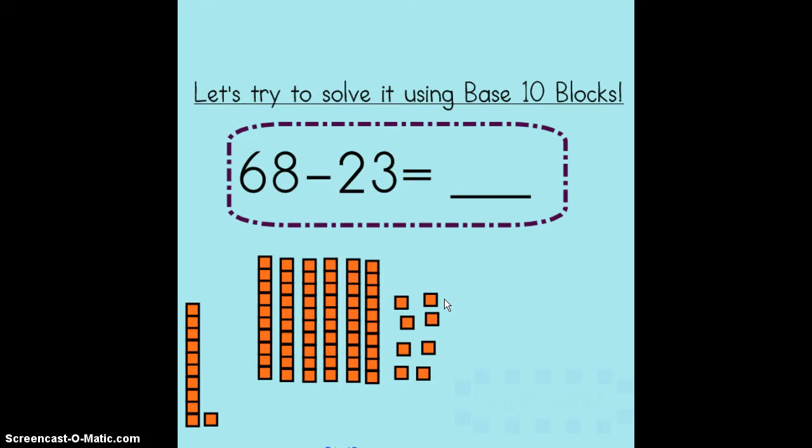To build the number 68 I should have used six tens and eight ones. Let's check my work. One, two, three, four, five, six tens. One, two, three, four, five, six, seven, eight ones.